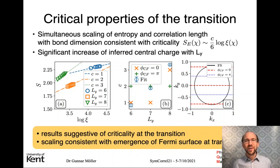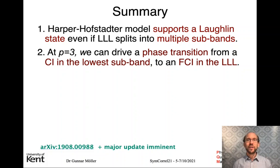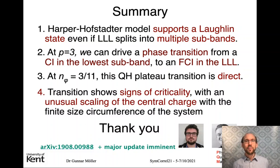This is very intriguing and I'd invite you to check out our preprint, which will shortly be updated, for further information. To summarize: the Harper-Hofstadter model supports Laughlin states even if the Landau level splits into multiple sub-bands, and if we choose flux densities with p = 3 — where we have exactly three sub-bands — we can drive a direct transition from a Chern insulator state into the Laughlin phase. This transition is direct at the particular flux density we studied, and intriguingly it shows signs of criticality with an unusual scaling of the central charge with the finite-size circumference of the system. Thank you very much for viewing my talk, and if you need more information the preprint with a major update is imminently available.